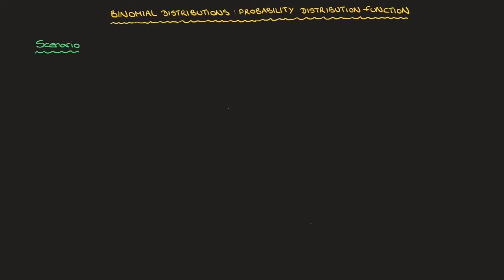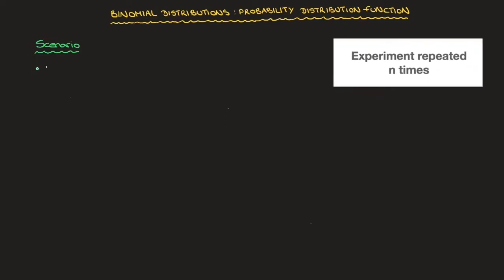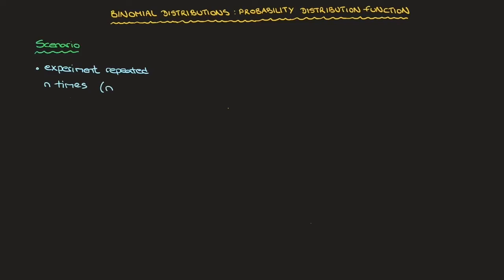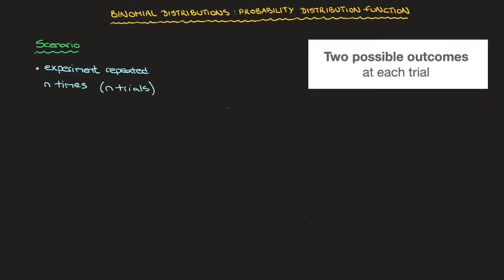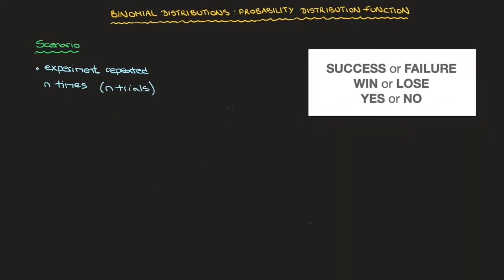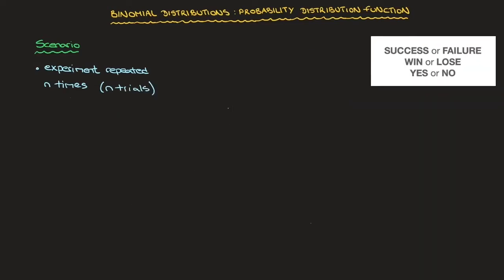We'll know we have to use the binomial distribution formula as soon as we're dealing with an experiment which is repeated n times — we'll often speak of n trials. Each time we repeat the experiment there will be two possible outcomes, those being success or failure.